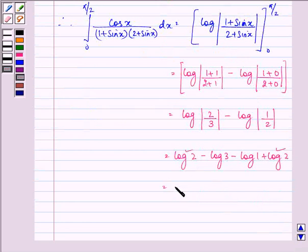These two by combining can be written as log 4 minus log 3 as the value of log 1 we know is 0.